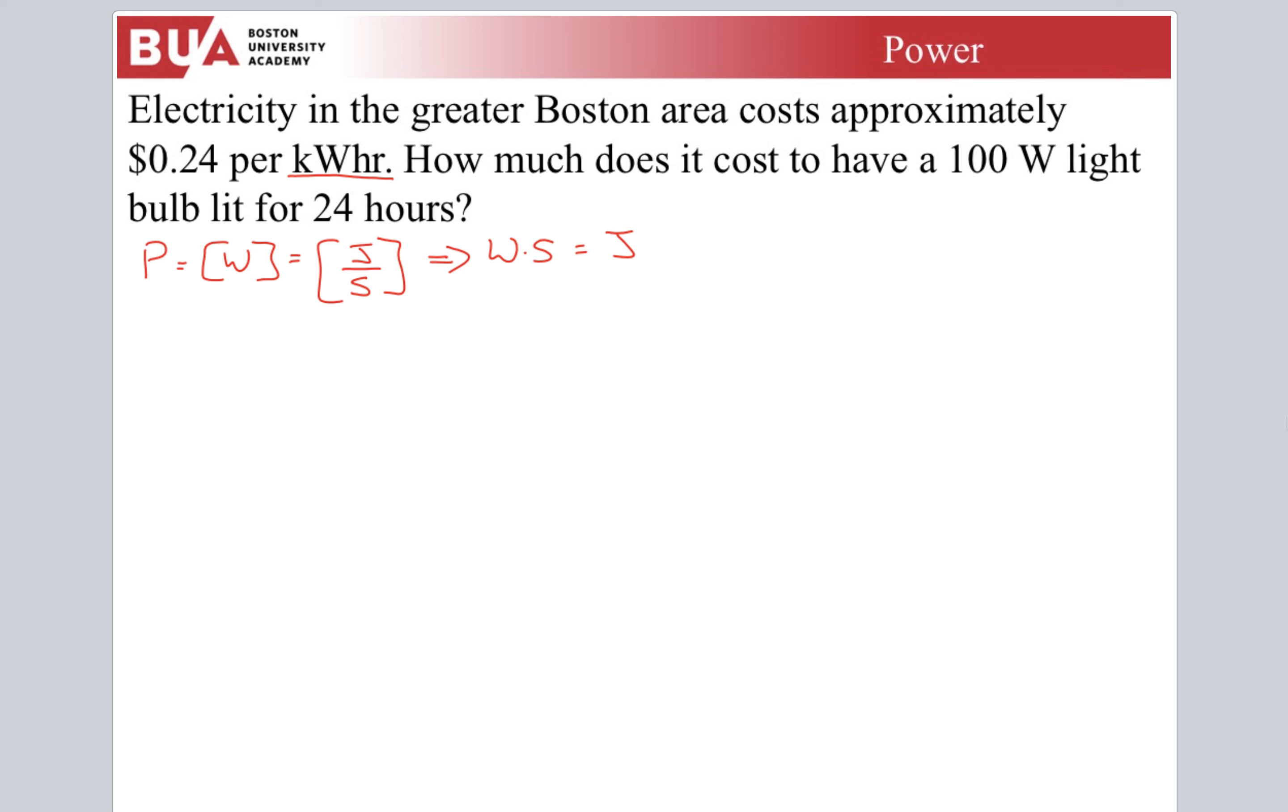This number is straight off my April electricity bill. I pay 24 cents per kilowatt hour. That means I have 0.24 cents per 1,000 watts, that's a kilowatt, times one hour. That's what we're saying. I want to know how much does it cost to have a hundred watt light bulb lit for 24 hours? Well, times 100 watts times 24 hours.